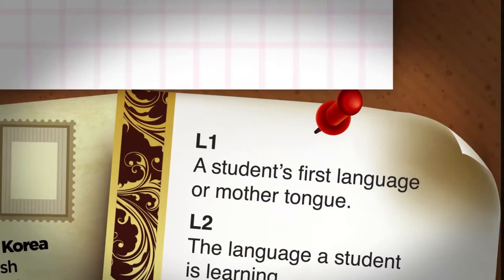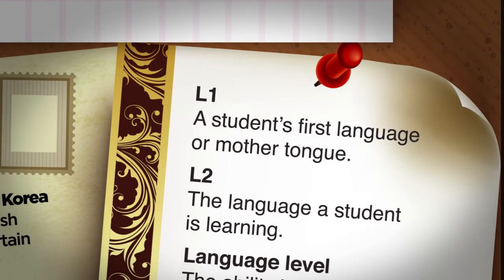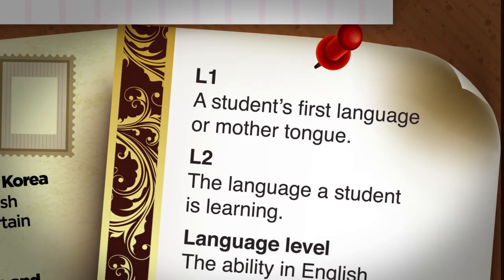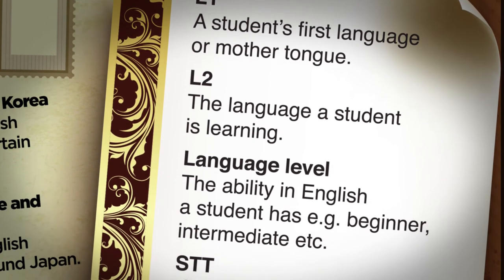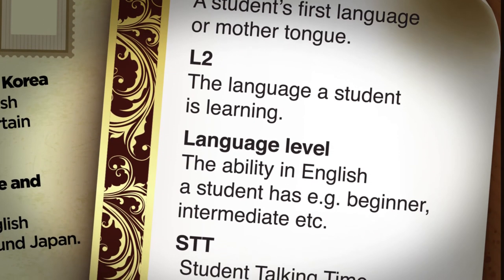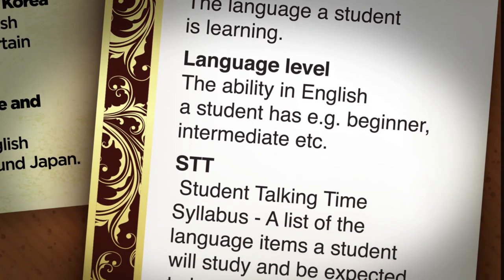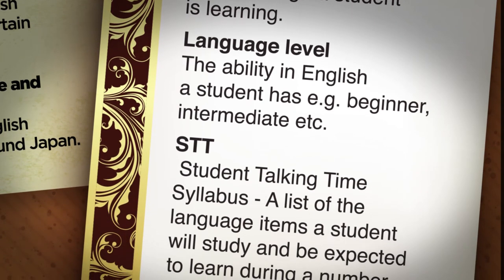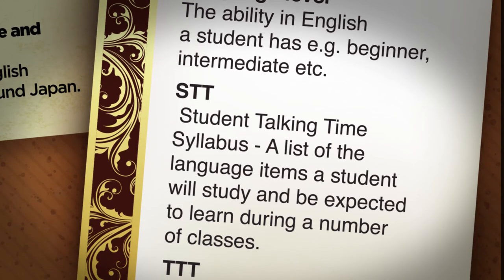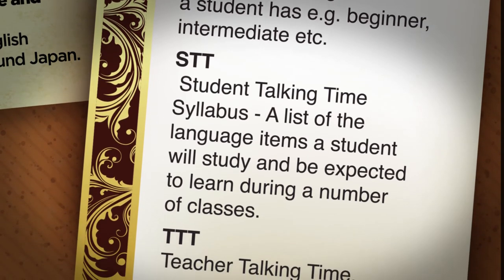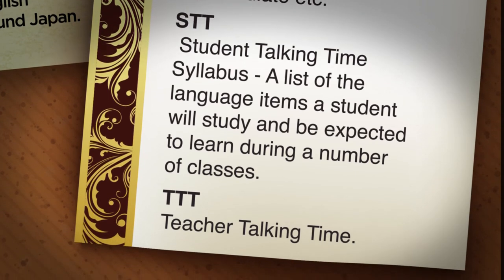L1: A student's first language or mother tongue. L2: The language a student is learning. Language Level: The ability in English a student has — for example, beginner, intermediate, and so on. STT: Student Talking Time. Syllabus: A list of the language items a student will study and be expected to learn during a number of classes.